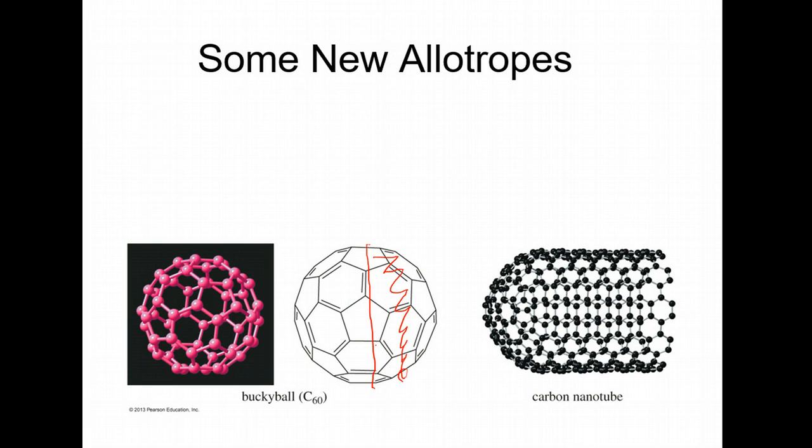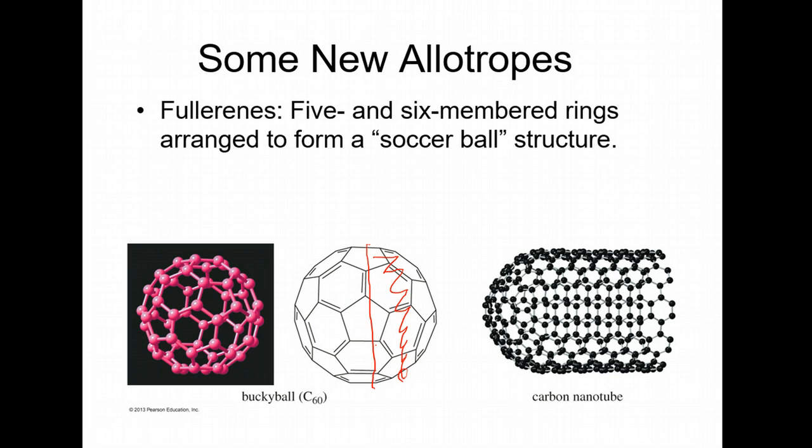A fullerene is a five or six-membered ring arranged to form a soccer ball structure. What do you mean by five and six memberings? Here's your six-membering benzene which kind of looks like it's making a five-membered ring. It's not that you have a five-membered ring, it's that you have five six-memberings fused together that look like they're making - but that's actually a hole right there.